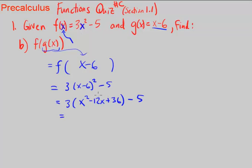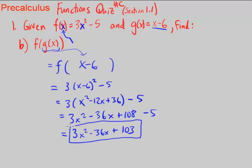Don't forget the minus 5. Then we want to distribute the 3 in to all of the terms. We have 3x² - 36x + 108. Don't forget the minus 5. And we can combine like terms is our last step. And we get 103. Okay, so this is our answer in simplified terms. Okay, so remember this was just the composition of functions.